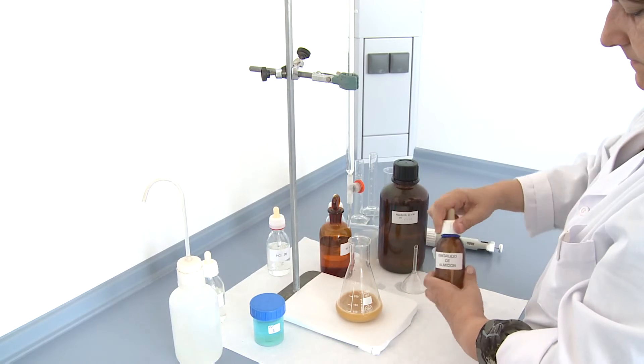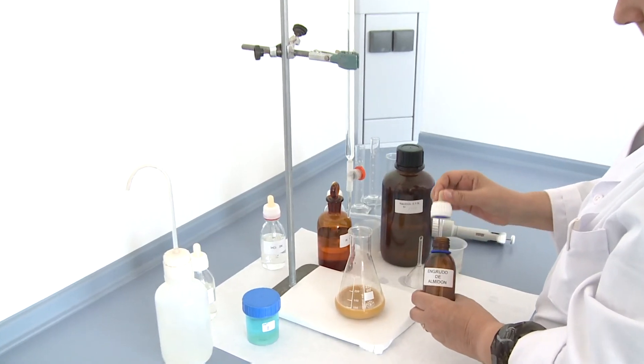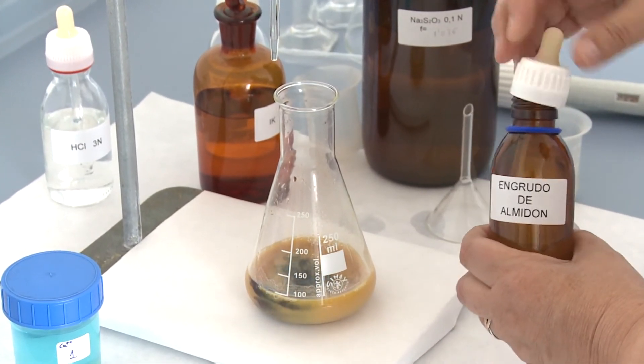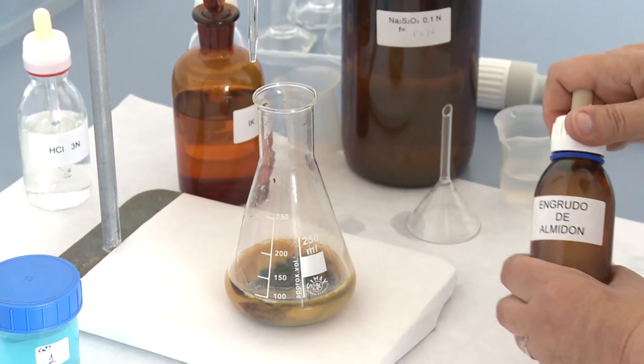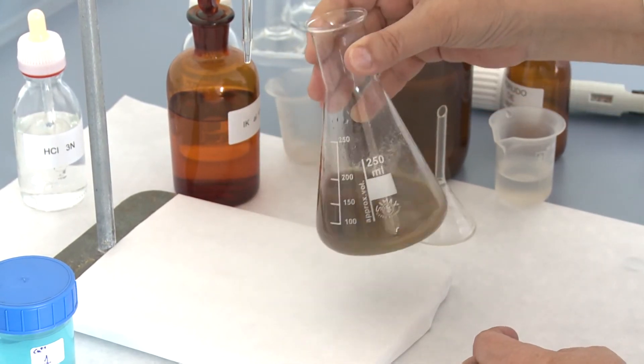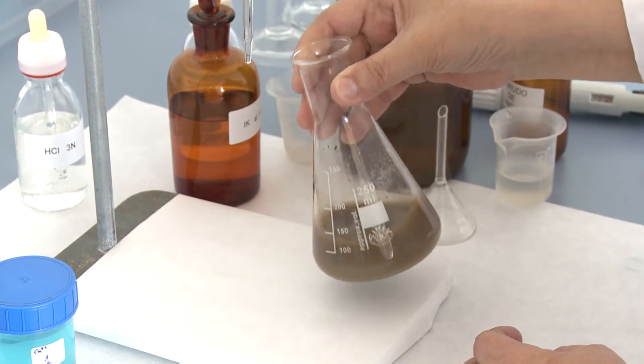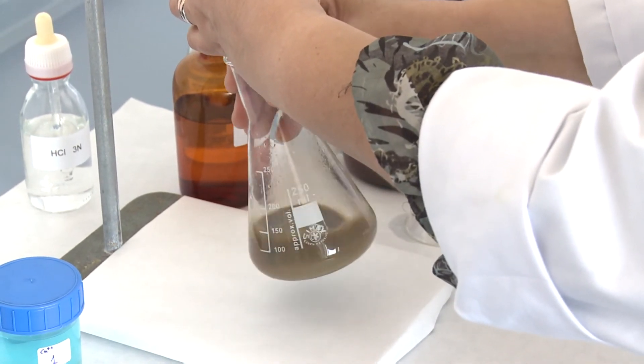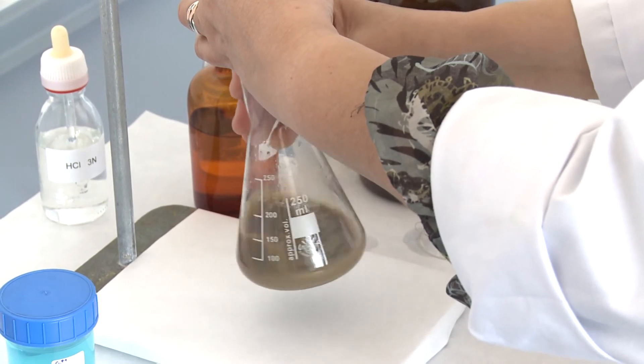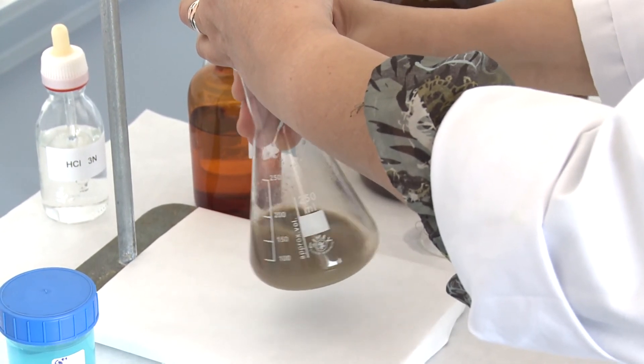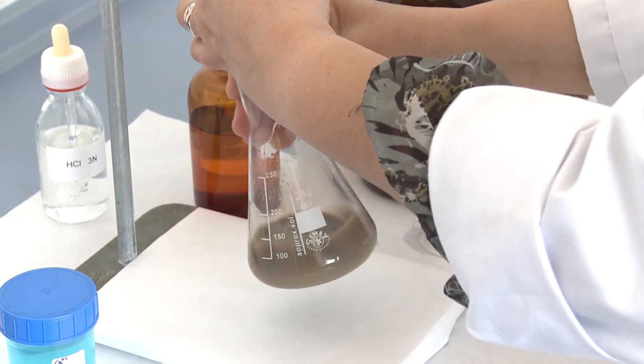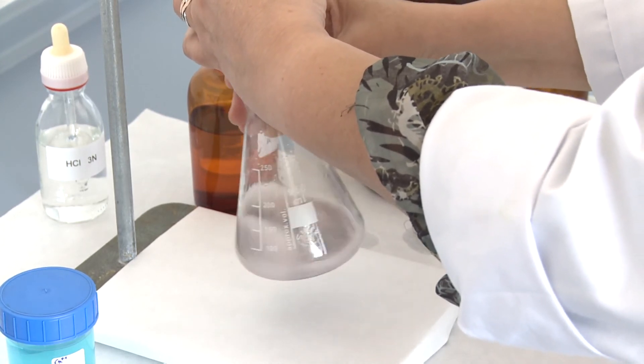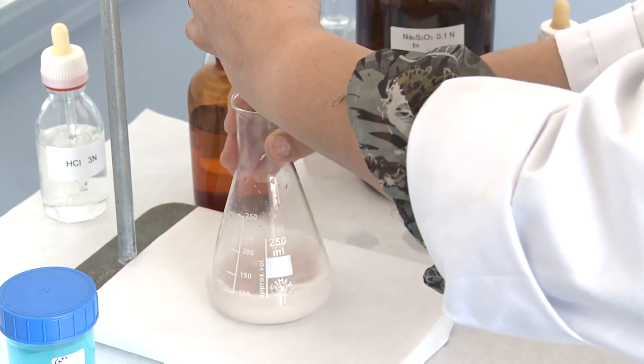And then add some drops of starch solution. The solution will become dark blue and we will continue titrating until a milky white color appears. This is the end point of the titration.